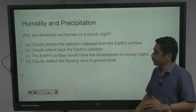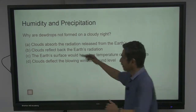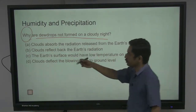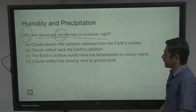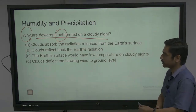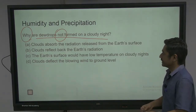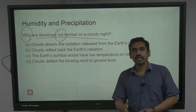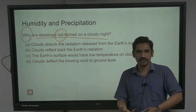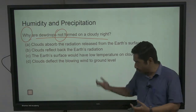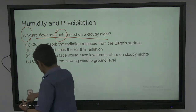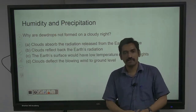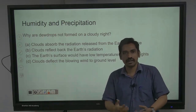Next question: Why are dewdrops not formed on a cloudy night? Options: clouds absorb the radiation released from the Earth's surface; clouds reflect back the Earth's radiation; the Earth's surface would have low temperature on cloudy nights; clouds deflect the blowing wind to ground level. All you need to know is the basics of the greenhouse effect and how clouds are formed. This is a basic question and the answer is there in NCERT — Fundamentals of Physical Geography, in the chapter 'Water and the Atmosphere,' which tells you about cloud formation and what factors are there.